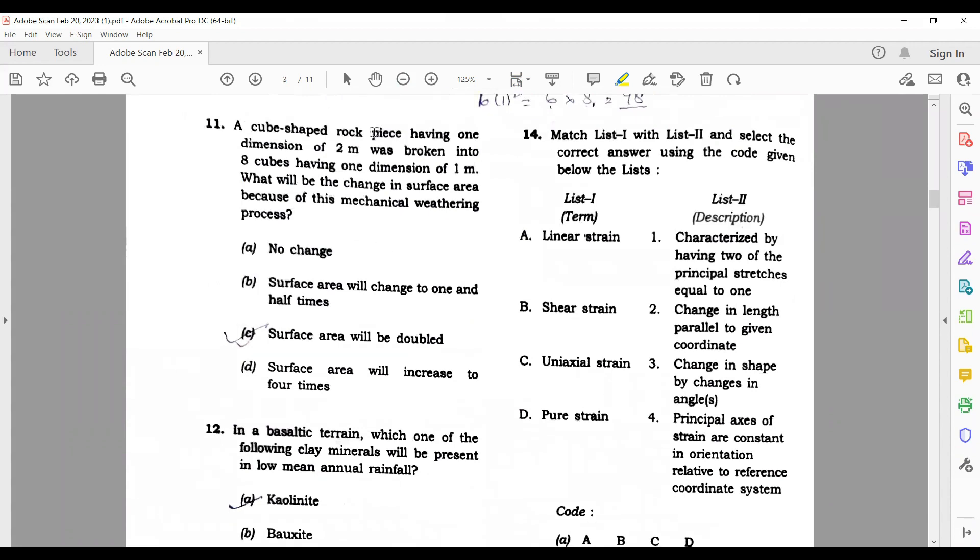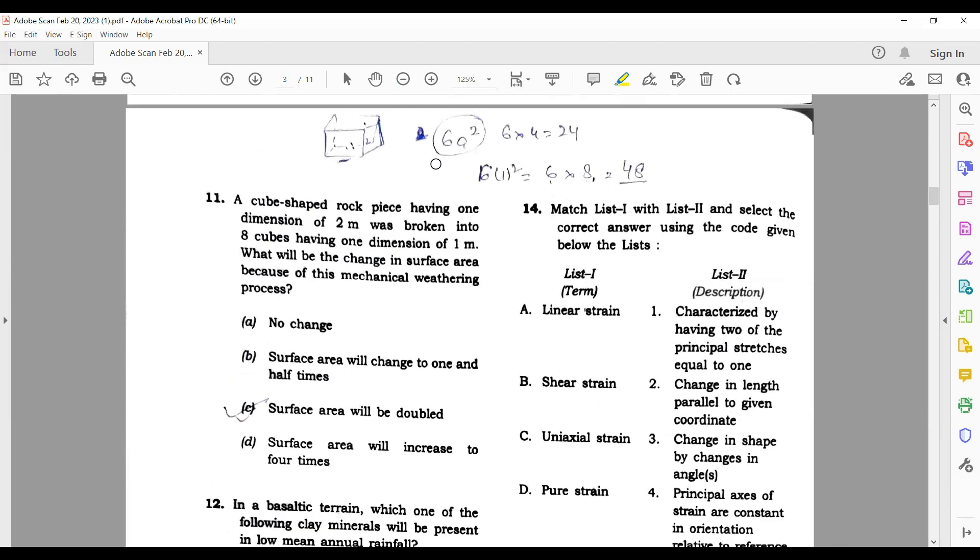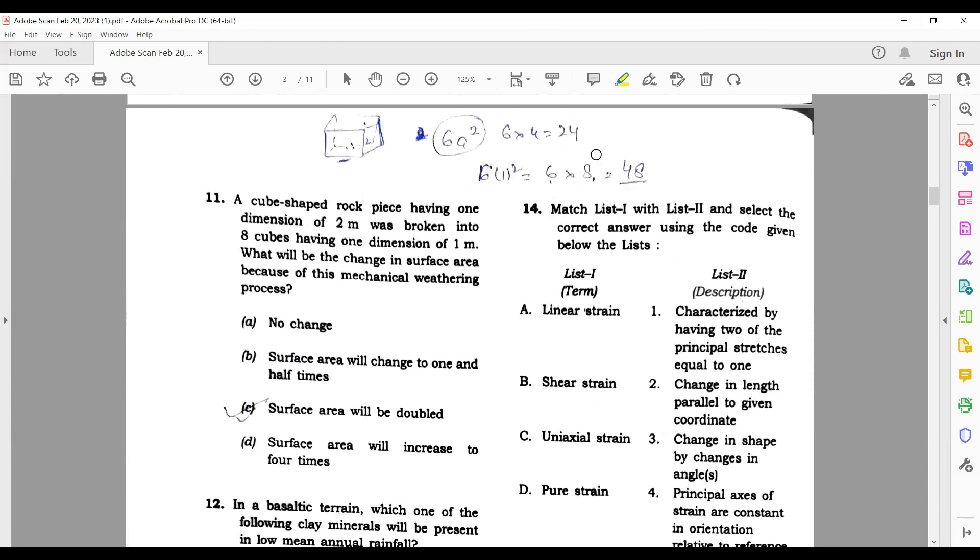A cubic rock piece having one dimension of two meters was broken into eight cubes having one dimension of one meter. What will be the change in surface area because of this mechanical weathering process? You have to calculate the surface area. He has done in the question 6A² = 24, then one meter 6 into 6 into 8 = 48. So its answer is surface area will be doubled.